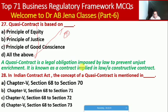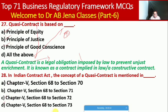In the Indian Contract Act, the concept of a quasi contract is a legal obligation imposed by law to prevent unjust enrichment. It is also known as a contract implied in law or constructive contract. The concept of quasi contract in the Indian Contract Act is mentioned in Chapter B, Sections 68 to 72. Here C is the right option.